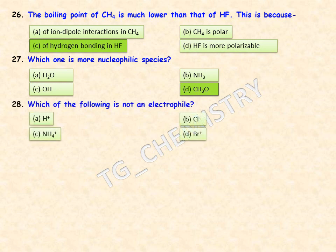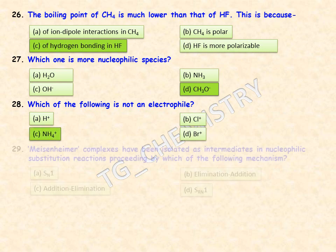Which of the following is NOT an electrophile? Options are H⁺, Cl⁺, NH₄⁺, and Br⁺. NH₄⁺ is the right answer — option C — as it is not an electrophile.